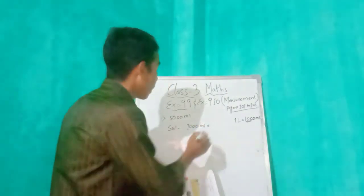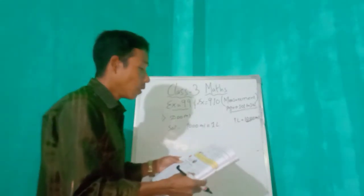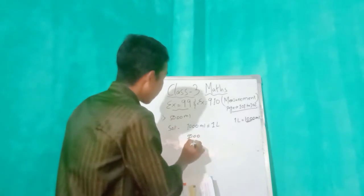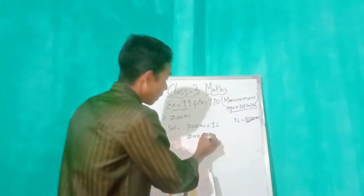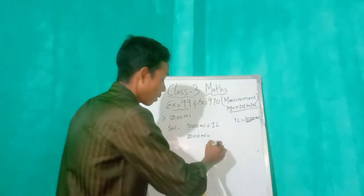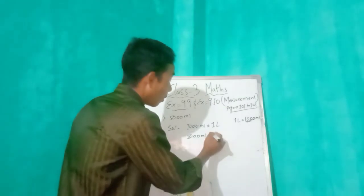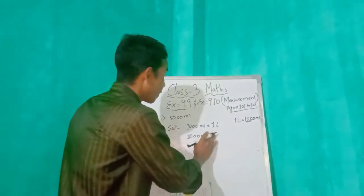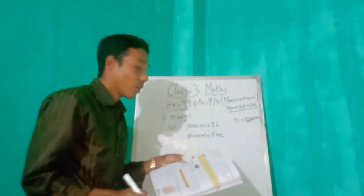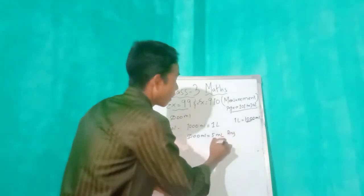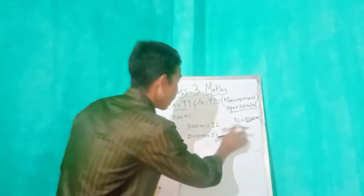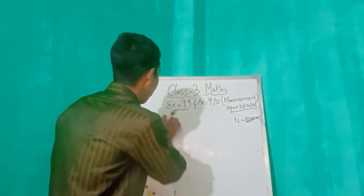One thousand mL equals one liter, so therefore 5000 mL equals 5 liters. This is our answer. Have you got it? Yes. Okay, one more — we'll do number two.